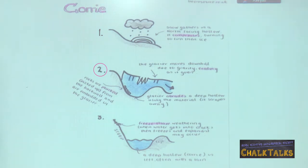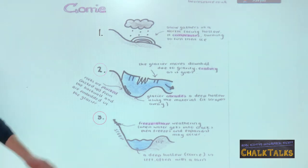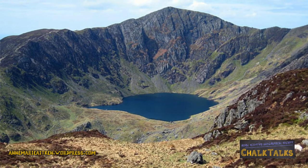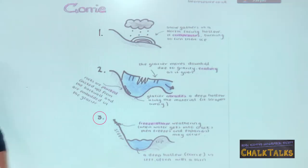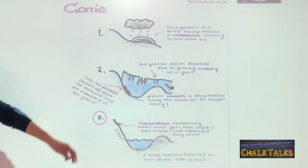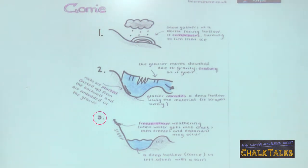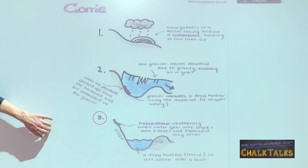Over time the hollow gets deeper and the back wall gets steeper. The glacier is moving because of gravity. In the final step, the diagram shows us the Corrie after the ice age with its steep back wall and over-deepened hollow. It is now filled by a small round lake known as a tarn and it has a lip at the front. The mountain continues to break up at the back wall through freeze-thaw, where water gets into cracks, expands at night when the temperature drops, and causes rocks to break off. This answer would easily score you four marks in explaining how a Corrie forms.